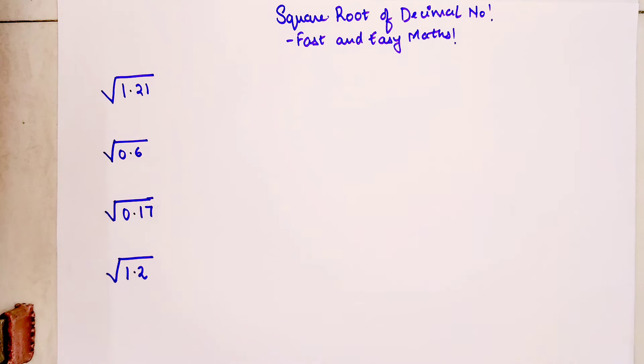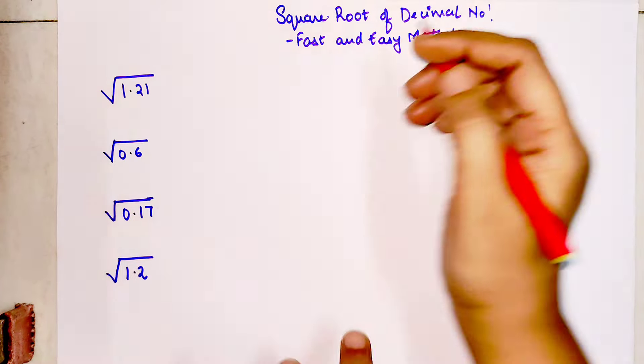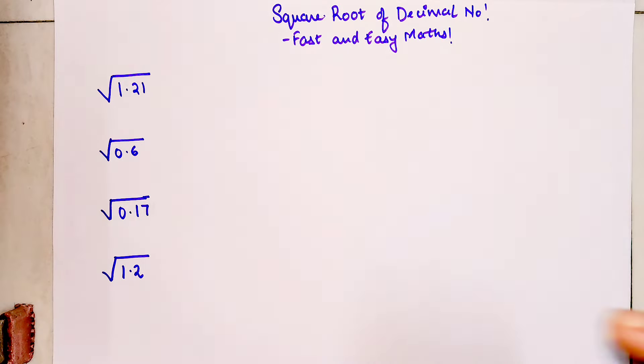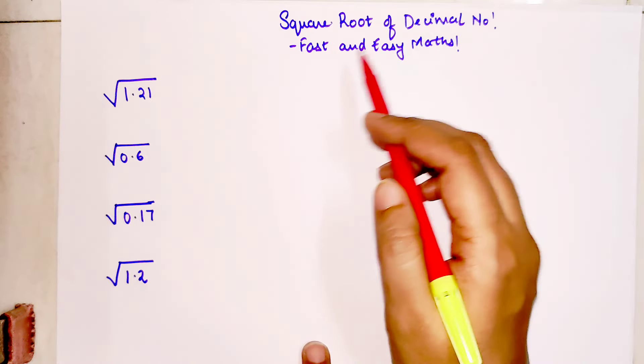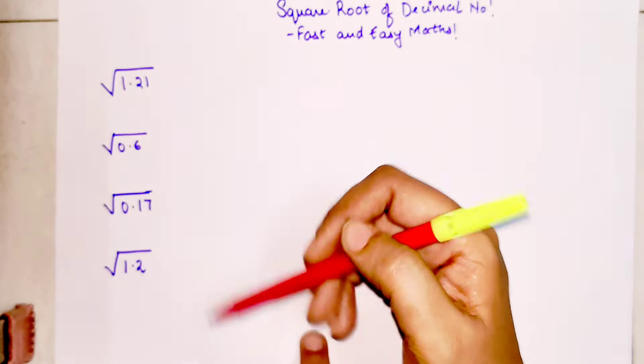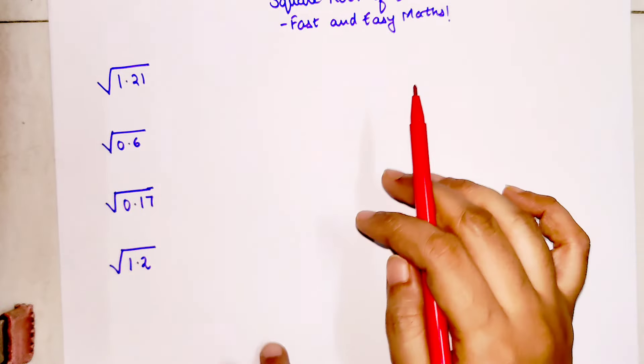Welcome everyone to my channel, Fast and Easy Maths, which is dedicated to give you tips and tricks related to mathematics. Today I'm going to show you a trick with which you'll be able to find the square root of any decimal number in a matter of seconds.